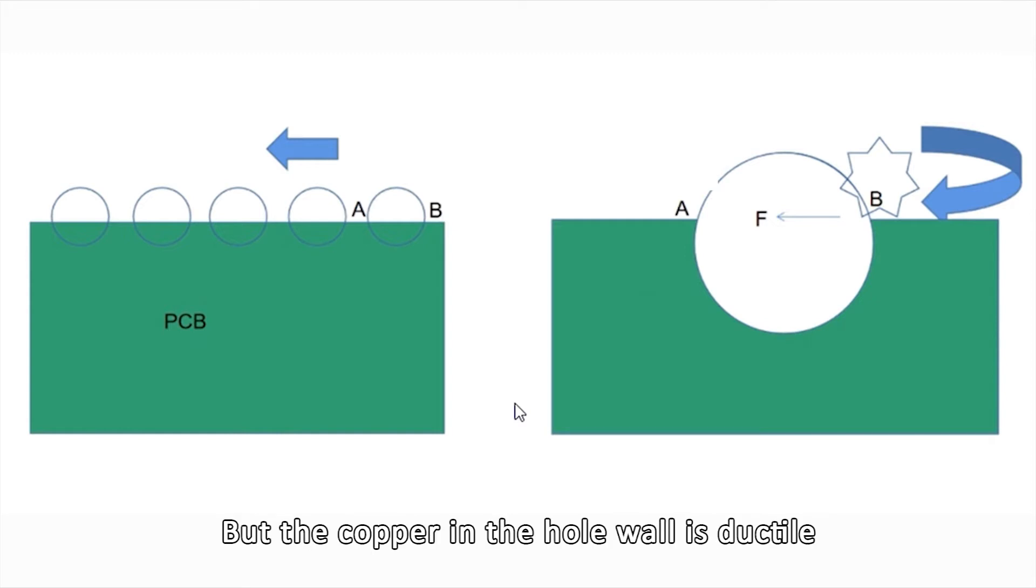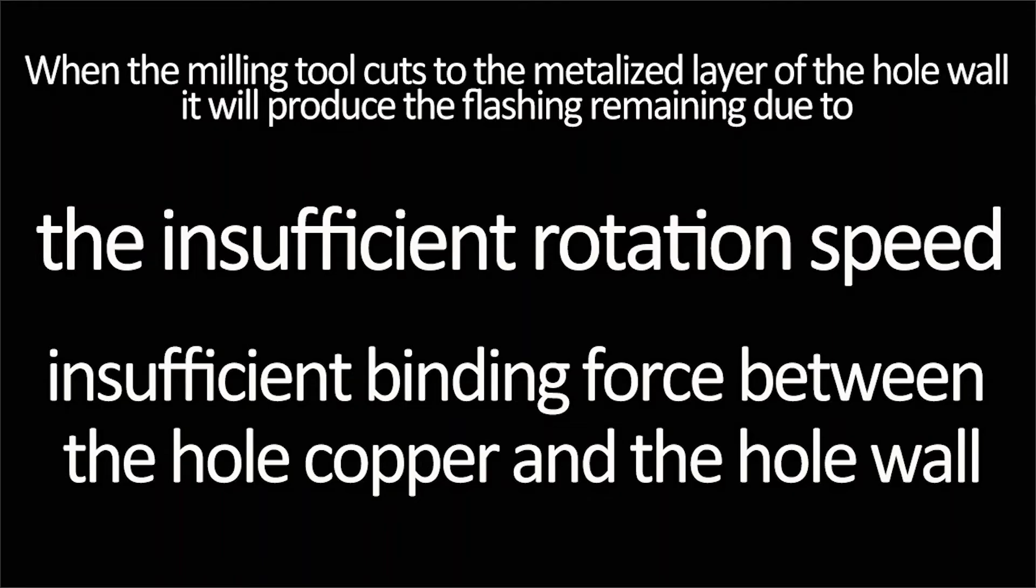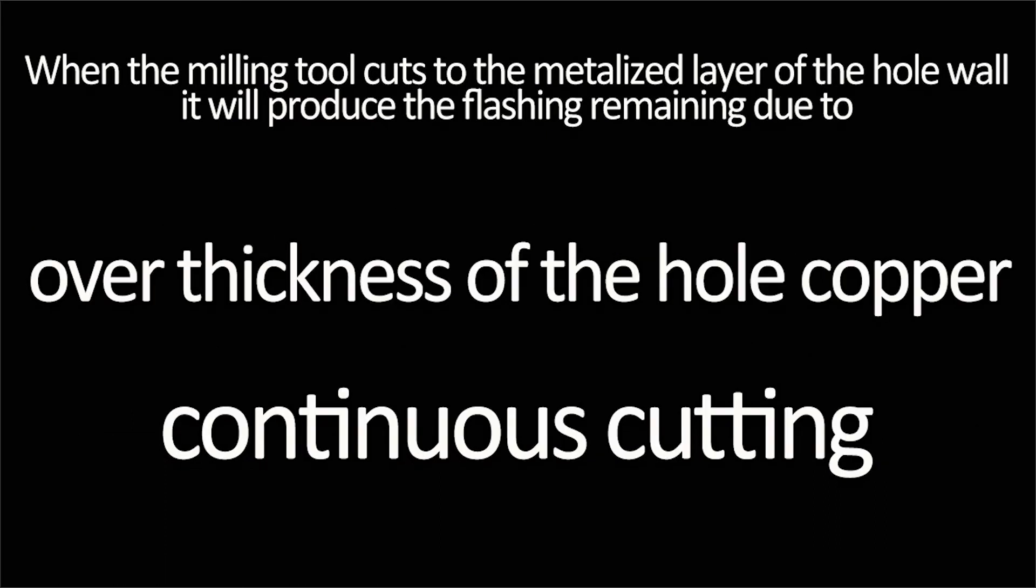The copper in the hole wall is ductile. When the milling tool cuts the metallized layer of the hole wall, it produces flashing due to insufficient rotation speed, insufficient binding force between the hole copper and the hole wall, excessive thickness of the hole copper, continuous cutting, etc.